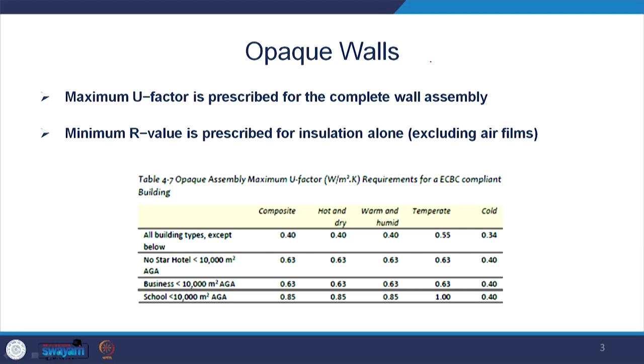First, we take the case of opaque walls. ECBC prescribes the maximum U value or U factor for a complete wall assembly. A complete wall assembly implies there will be plaster on one side, then a brick wall, possibly insulation in between, then another cladding material, and another layer of plaster or finishing material. When talking about the properties of this wall, we refer to the properties of the complete wall assembly, not an individual material.